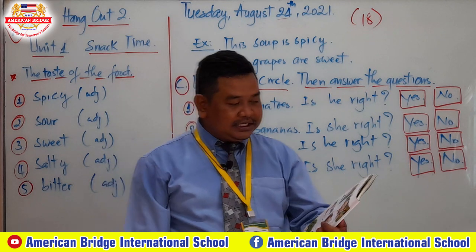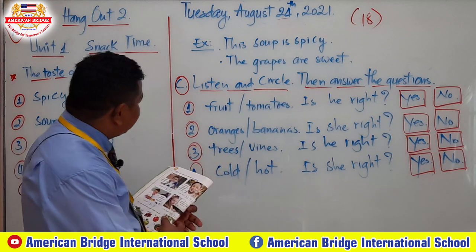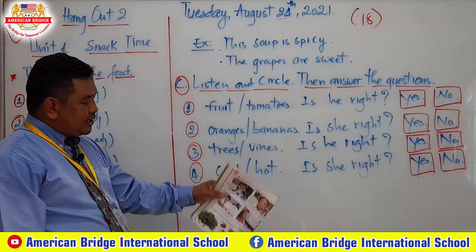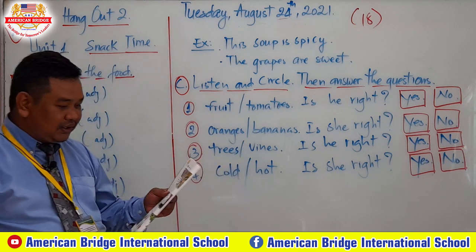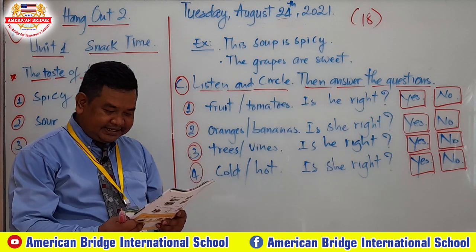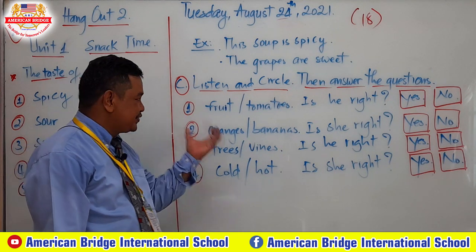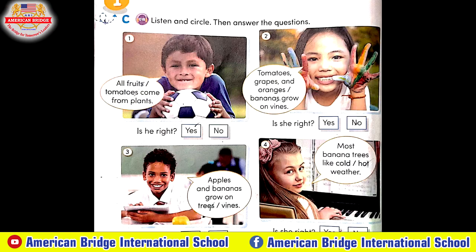Right now, students, please open your book to page 18, Part C: Listen and Circle, then answer the questions. We have questions one, two, three, and four. I'll write them in short here so when you listen, you can choose the correct answer. Now start to listen — listen and circle, then answer the questions.